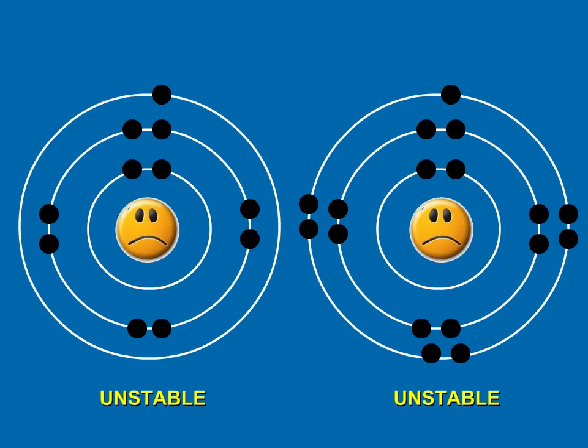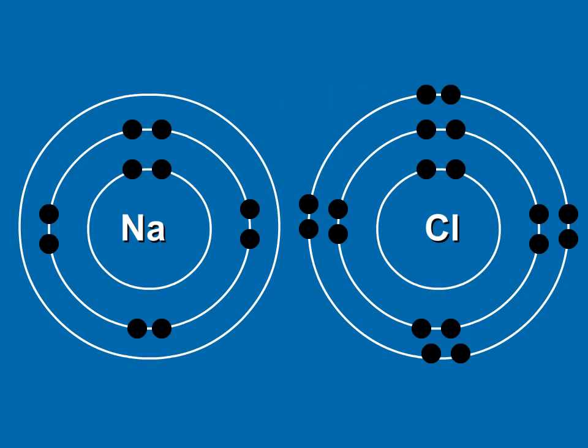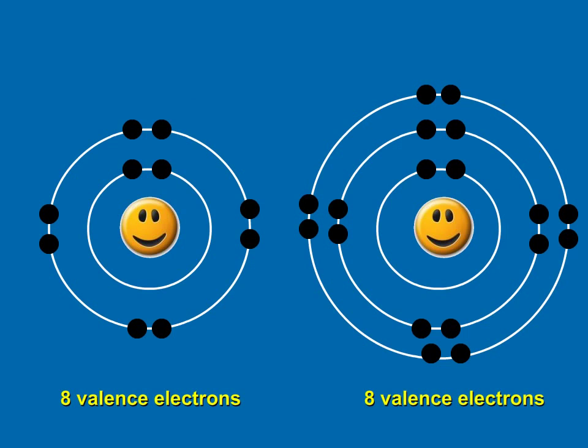So if chlorine just needs one more electron to be stable, and is highly electronegative, what do you think it will do? Yes. Chlorine will steal sodium's one lonely valence electron. Are both atoms now stable? Yes. They now both have eight electrons in their valence shells. They are happy and stable.